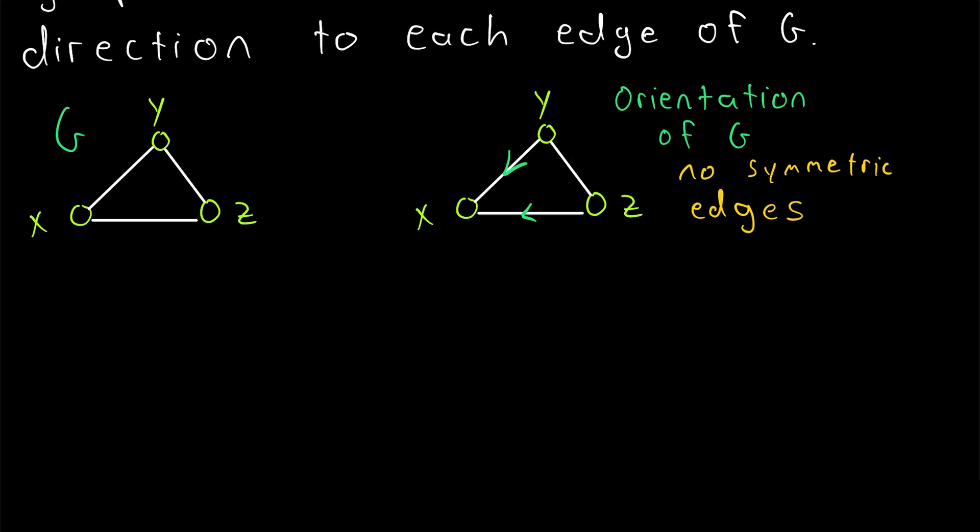However, we could have preserved that ability if we oriented the graph slightly differently. Say we oriented it like that. Then we could travel from Y to X, Y to Z, X to Z, X to Y, Z to Y, and Z to X.